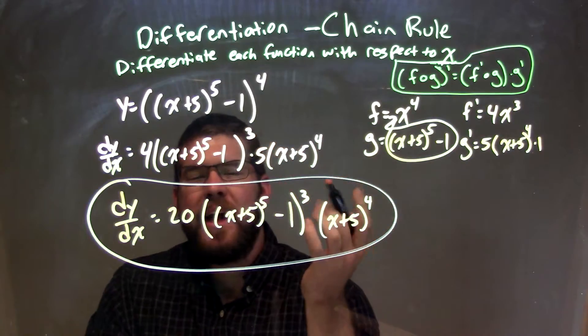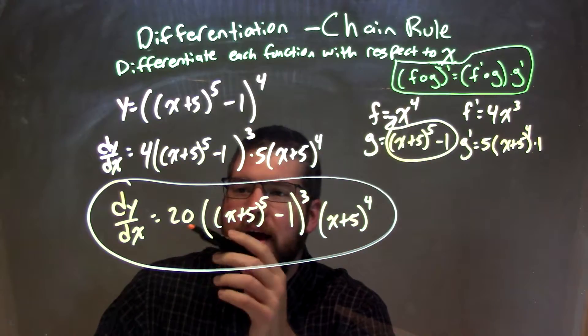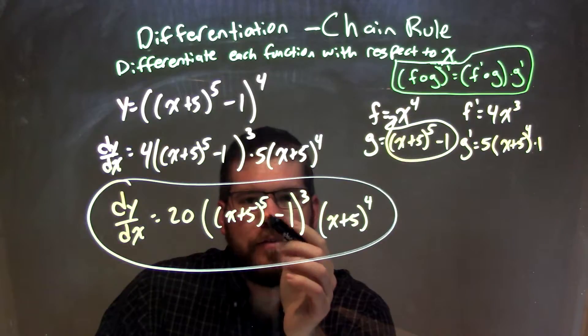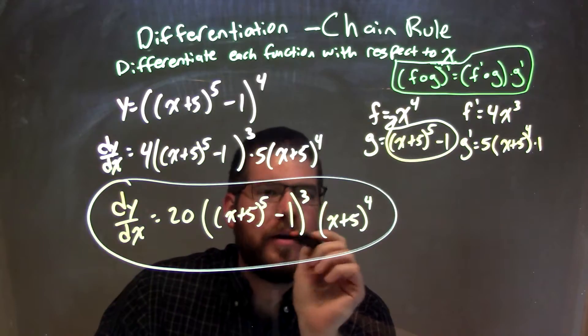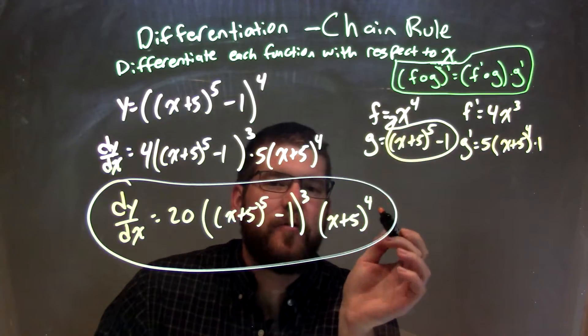So then after that, I had my derivative, which is great. And then as I do my simplification using algebra, I have dy dx is equal to 20 times another parenthesis, x plus 5 to the 5th power minus 1, all that to the 3rd power, times parentheses x plus 5 and parentheses to the 4th power.